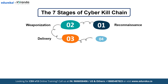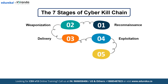Stage 4 is Exploitation: the payload is activated and the attacker exploits vulnerabilities to gain access, which often includes lateral movement across the network. Stage 5 is Installation: attackers install malware or backdoors to establish persistent access, with examples including Trojan horses and command line interfaces.